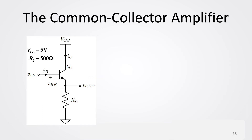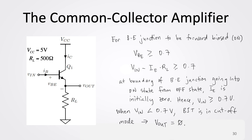The common collector amplifier has the input at the base, the output at the emitter, and the collector is common — connected to VCC, since for an NPN the collector must be at a higher potential than the emitter. It is called common collector because the collector is neither at the input nor the output. To analyze this circuit, when VIN is less than 0.7 volts the BJT is in cutoff mode, all currents are zero, and Vout — the voltage drop across RL — equals zero.